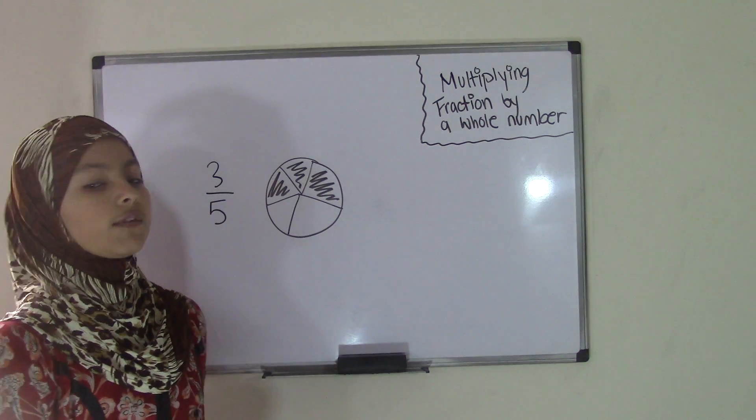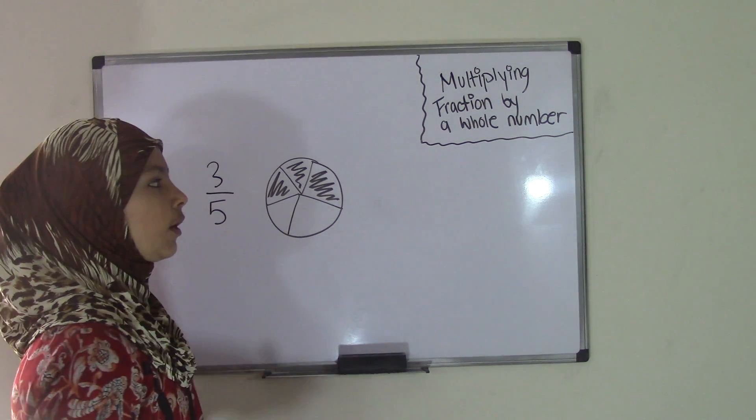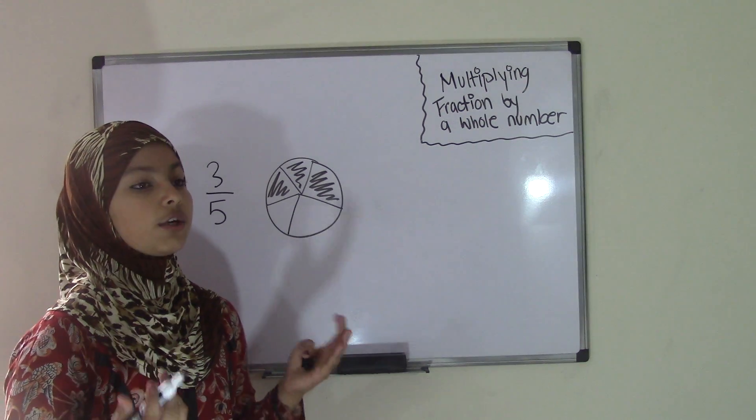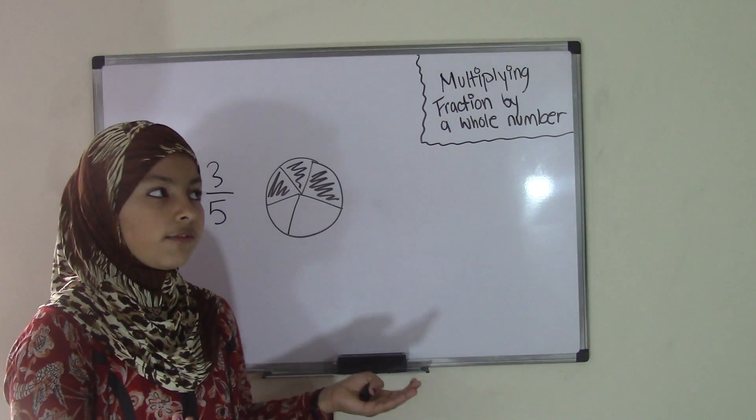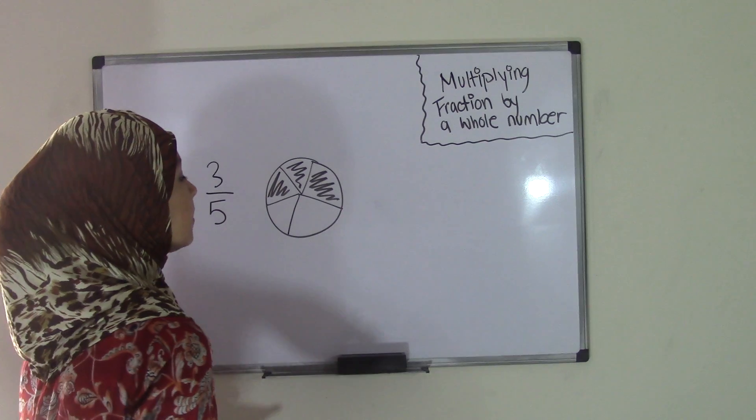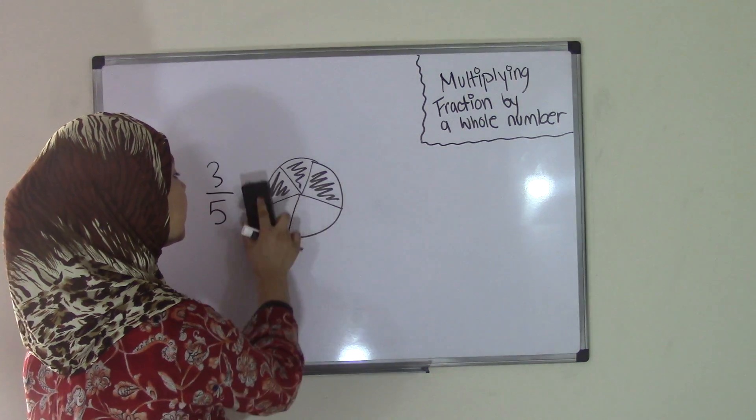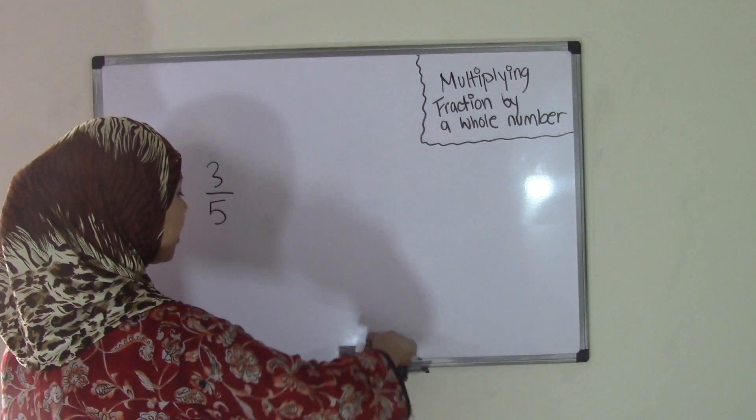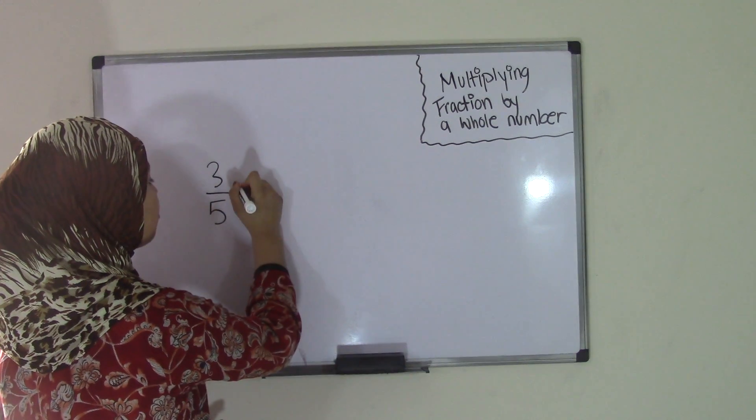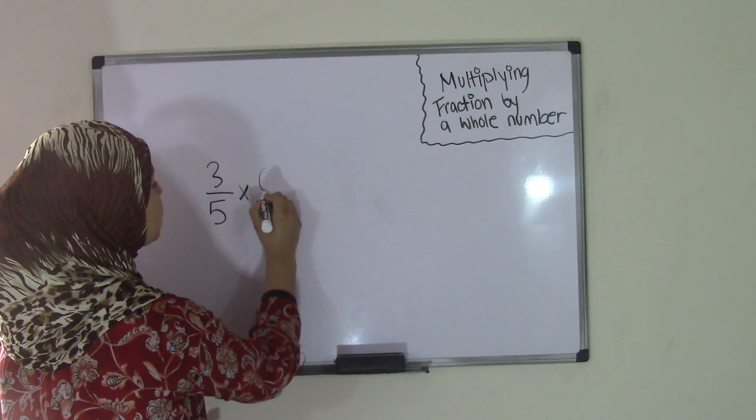This is the fraction that we're going to be working with today. Now a whole number, as we all know, is just a number that starts from 0 and it goes on and on. So an example could be maybe 6, because 6 is just a whole number. So that means we would have 3 out of 5 times 6.